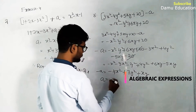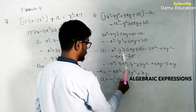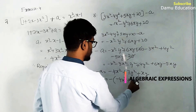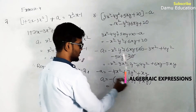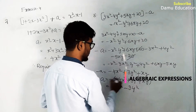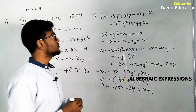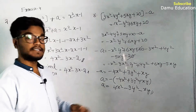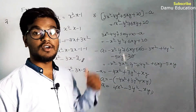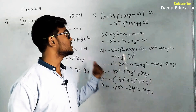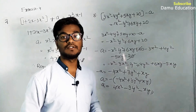Multiplying by -1: -(-4x²) = +4x², -(+3y²) = -3y², -(+xy) = -xy. So the term that should be taken away is 4x² - 3y² - xy from 3x² - 4y² + 5xy + 20 in order to get -x² - y² + 6xy + 20. Thanks for watching this video.